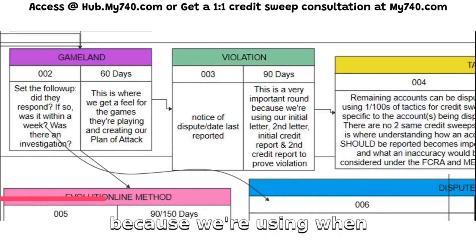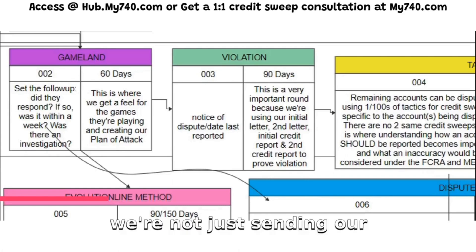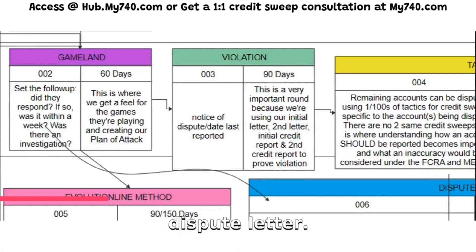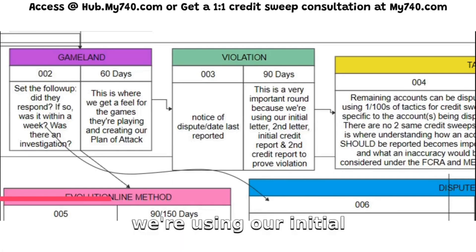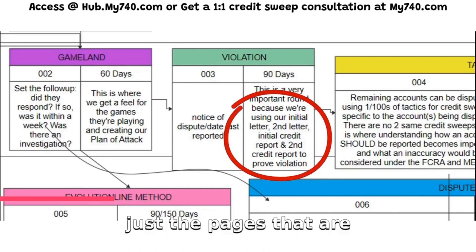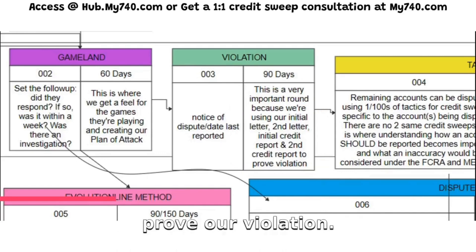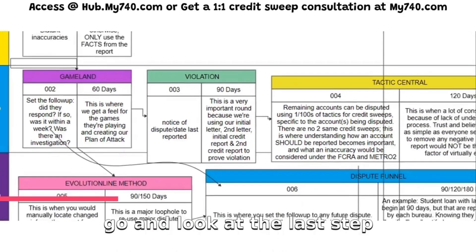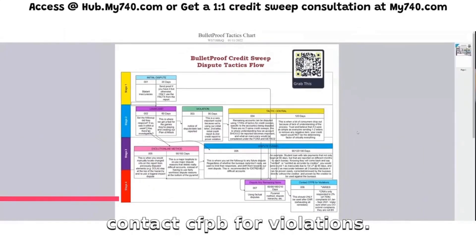This is an important round because we're not just sending a dispute letter — a lot of people think you just send a dispute letter, but no. We're using our initial letter, our second letter, our initial credit report, and our second credit report — just the pages relevant to our accounts — to prove our violation. Then look at the last step: contact the CFPB for violations.